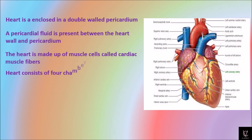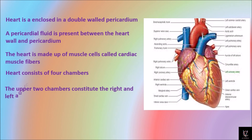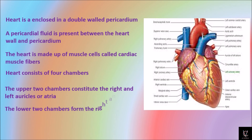The heart consists of four chambers. The upper two chambers are the right and left auricles, also called atria. The lower two chambers are the right and left ventricles. The upper part of the heart is called the auricular part and the lower part is called the ventricular part. The auricles are divided into left and right, and the ventricles are also divided into left and right.